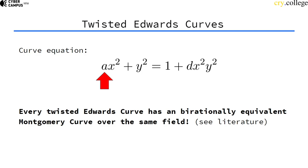as a twisted Edwards curve, and every twisted Edwards curve we can rewrite into a Montgomery curve, which is quite handy. What birational equivalence means you can see in the accompanying literature, but